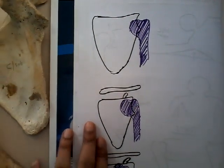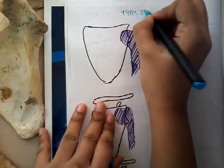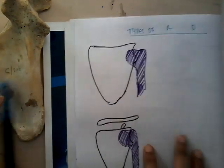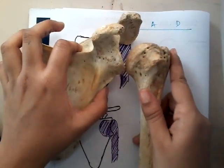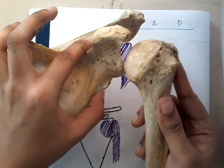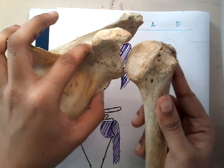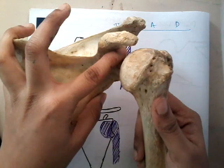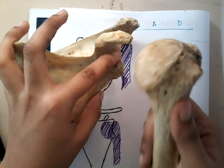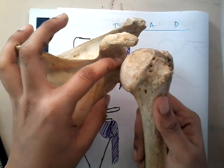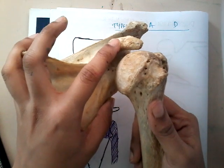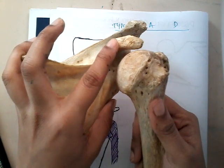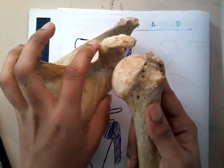Anterior dislocation is further divided into three types. First, if the anteriorly dislocated head of the humerus is in front of the glenoid process or glenoid labrum, that is called pre-glenoid. Second, if the head is just below the coracoid process, that is called sub-coracoid.